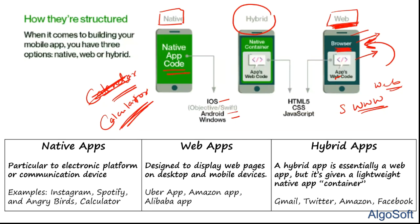A key distinction: a calculator app (native) performs calculations and does not store data anywhere unless history is enabled. By contrast, Facebook (hybrid/web) stores your comments, lets you fetch data from 100 days ago, and retains information server-side. Combining both — device hardware access plus server-side data storage — is what defines a hybrid app.